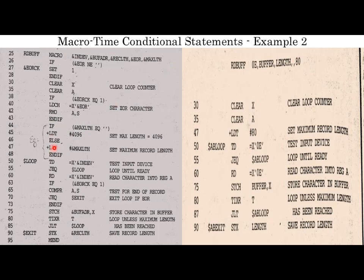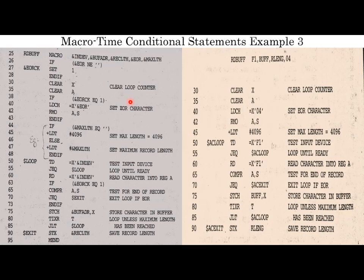Since max1 is 80 here — not equal to null — the condition is false, so plus LDT hash 80 will be in the expanded program at line 47. Lines 50, 55, and 60 will also be there. The macro time label is 'ab' because this is the second invocation. The condition if URCK equals 1 is false since it was never set to 1, so lines 65 and 70 will not be there. Lines 75, 80, 85, and 90 are also present.